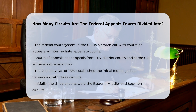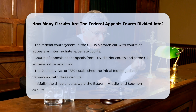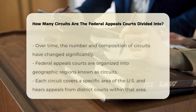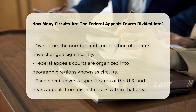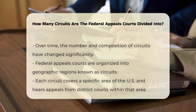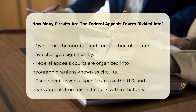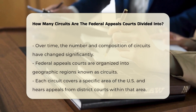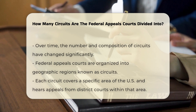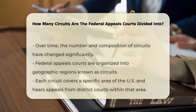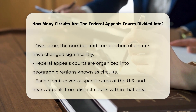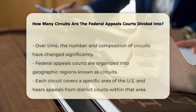Historically, the Judiciary Act of 1789 established the initial framework for the federal judicial system, including the creation of three circuits: the Eastern, Middle, and Southern Circuits. However, over time, the number and composition of these circuits have undergone significant changes.